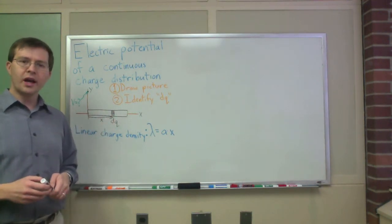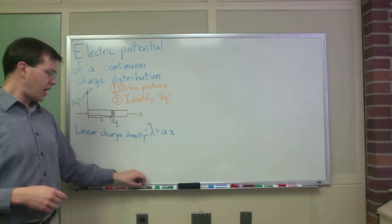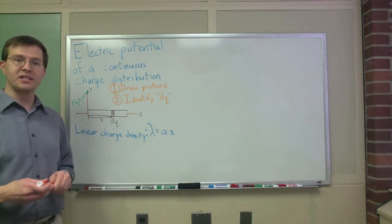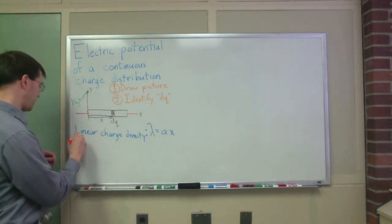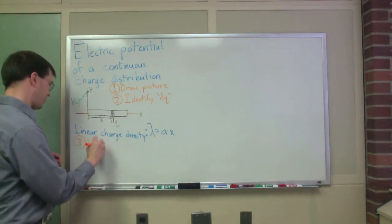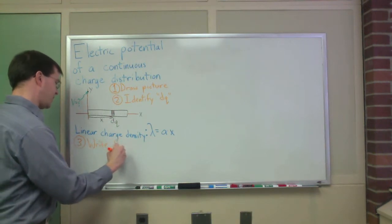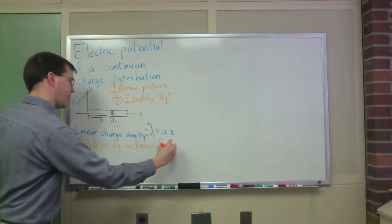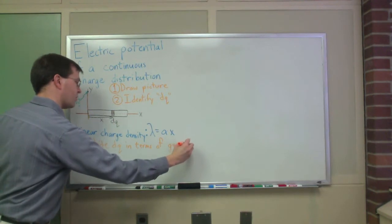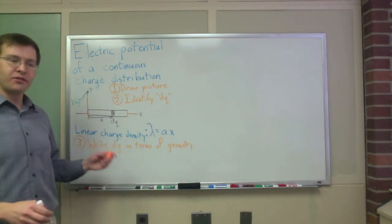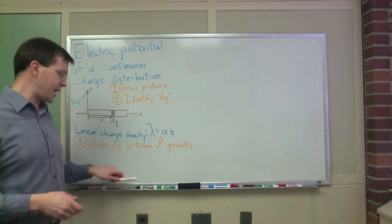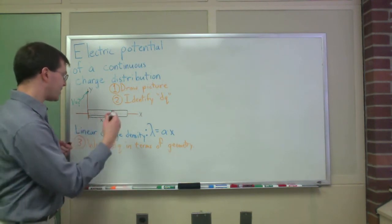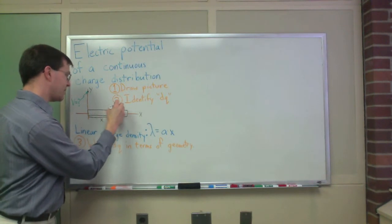Once I've done this dq, I want to write the dq in terms of geometry, in terms of the geometry of the problem, something about that position x that is my label variable. That's my step three: write the quantity dq in terms of geometry. In this case that's really easy. We've been given this linear charge density lambda. What is a linear charge density? It's charge per unit length.